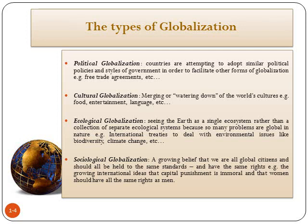Ecological globalization is the process of seeing the earth as a single ecosystem rather than a collection of separate ecological systems. Because a lot of problems are happening, we are focusing on expanding and doing business without taking care of the environment. A good example is international treaties to deal with environmental issues like biodiversity or climate change.